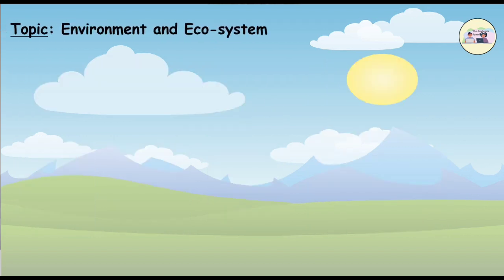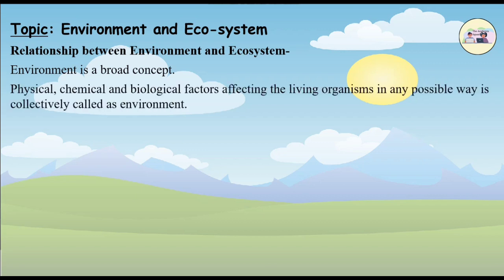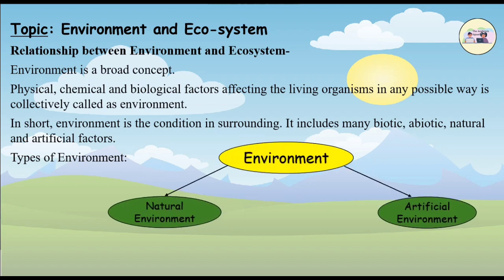Environment is a broad concept. Physical, chemical, and biological factors affecting living organisms in any possible way are collectively called the environment. In short, environment is the condition in the surrounding. It includes many biotic, abiotic, natural, and artificial factors. There are two main types of environment: natural environment and artificial environment.